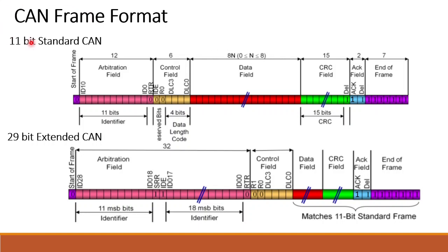CAN frame formats were discussed in previous sessions — the 11-bit standard CAN frame format and the 29-bit extended CAN frame format. We are mainly interested in the 12-bit arbitration field in the standard CAN frame format and the 32-bit arbitration field in the extended CAN frame format. Using this arbitration field, we decide which node has the highest or lowest priority.